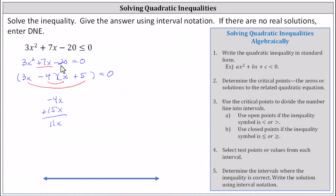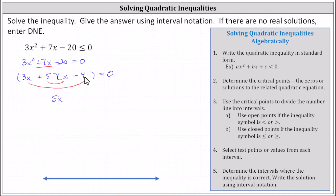Let's try switching the negative four and positive five. The inner product is 5x, the outer product is −12x, and the sum is −7x. Notice we want positive 7x and we have negative 7x — we have the wrong sign, but that's an easy fix.